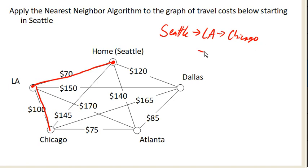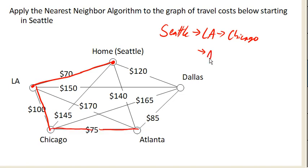And then from Chicago, we don't want to go back home yet, right? We still need to visit Dallas and Atlanta. So we only really look at the unvisited cities. Of those two, it looks like Atlanta is the cheapest, so we'll go to Atlanta next.